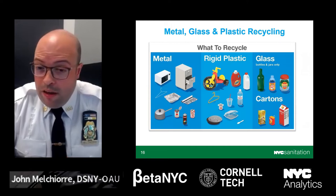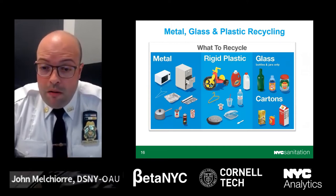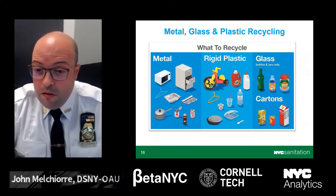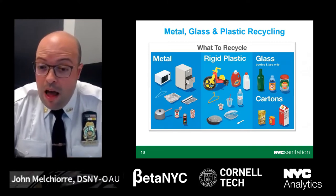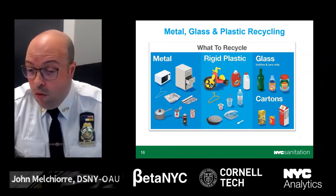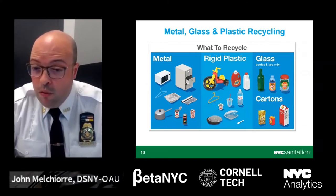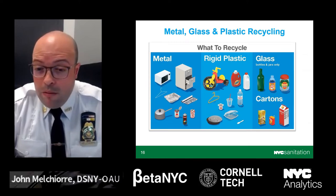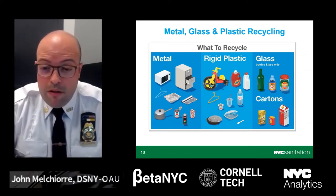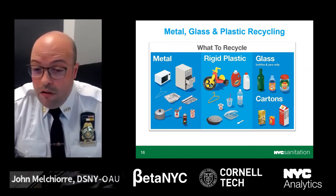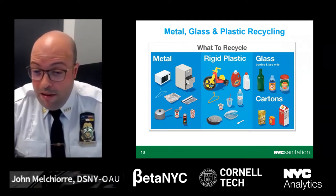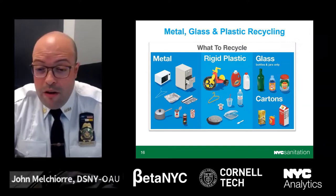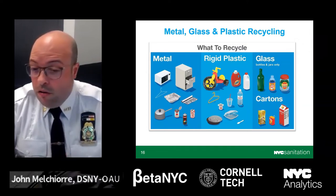In New York City, MGP recycling includes all kinds of metal — metal cans, caps and lids, aluminum foil, aluminum wrap, trays, household metal items including wire hangers, pots, and tools, and bulky metal items including furniture and metal cabinets. It also includes glass bottles and jars, rigid plastic such as plastic bottles, jugs, jars, plastic caps and lids, plastic containers, and housewares. Cartons include food and drink beverage cartons.